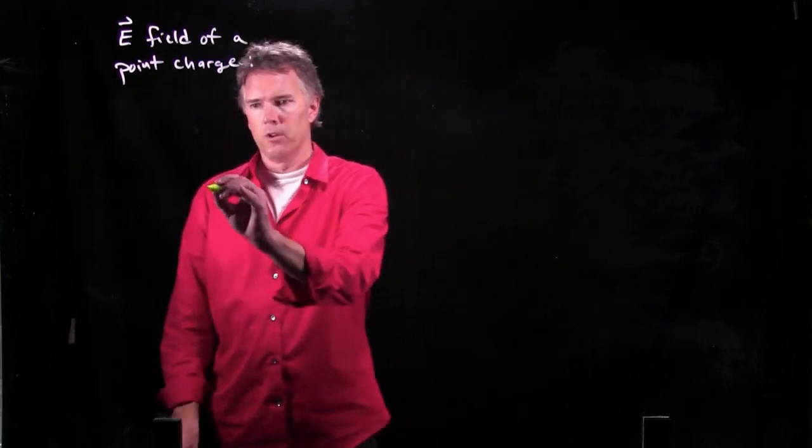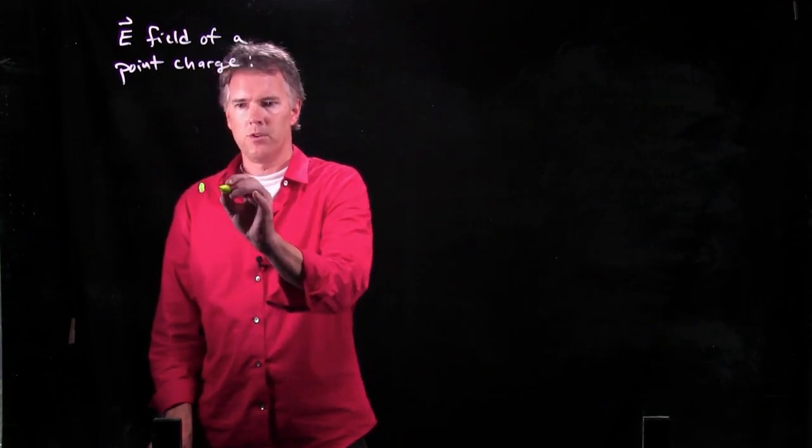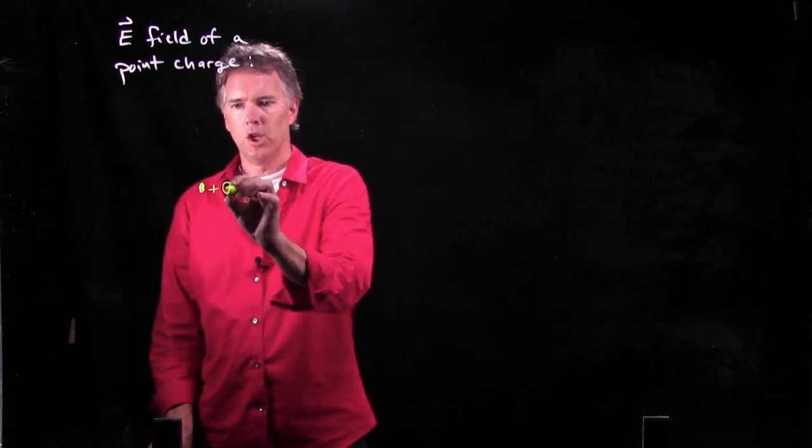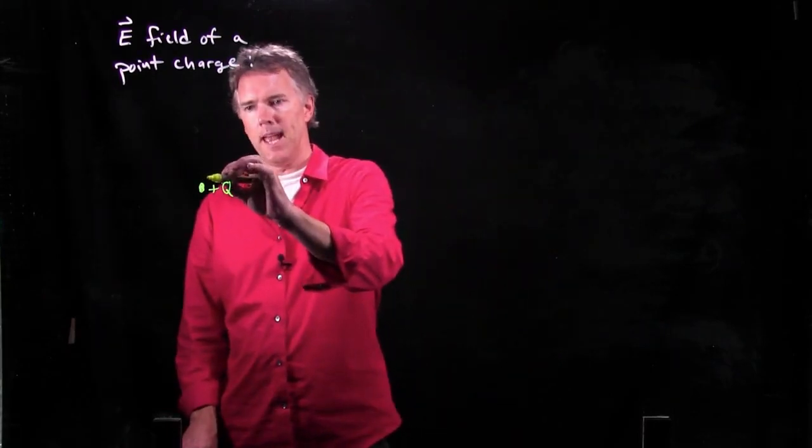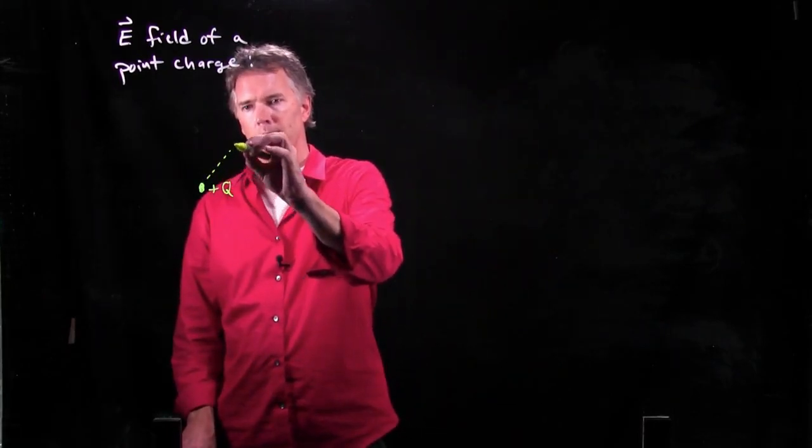So we know what a point charge looks like. Here's our point charge, let's call it positive Q. And that point charge has an E field that is pointing everywhere, radially outward.